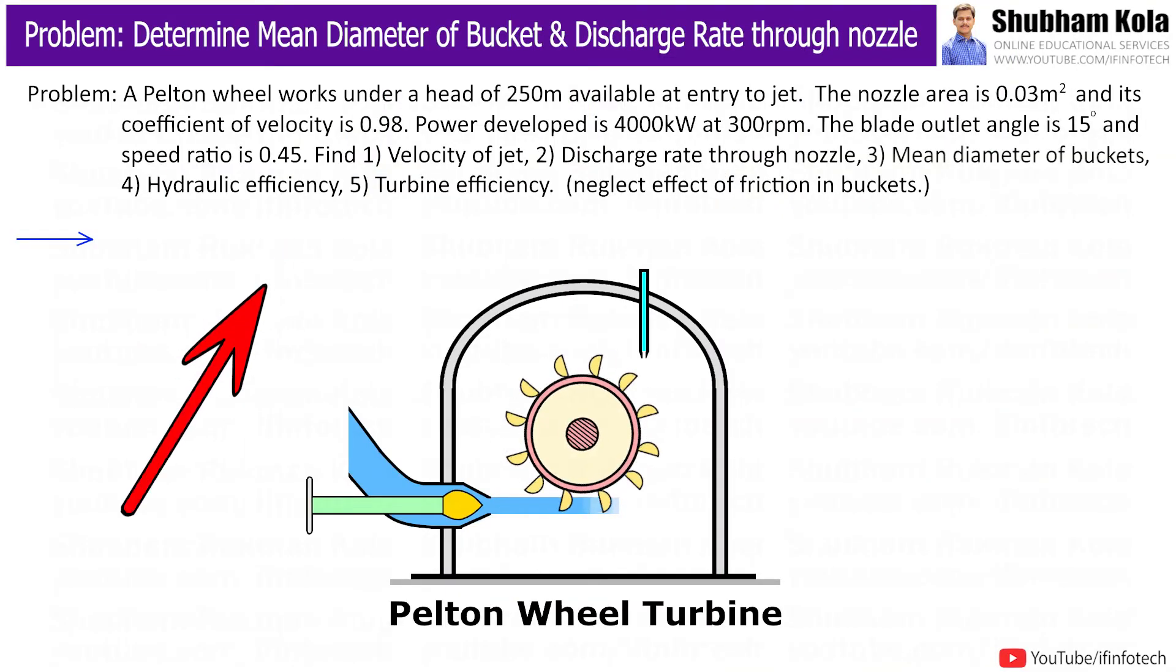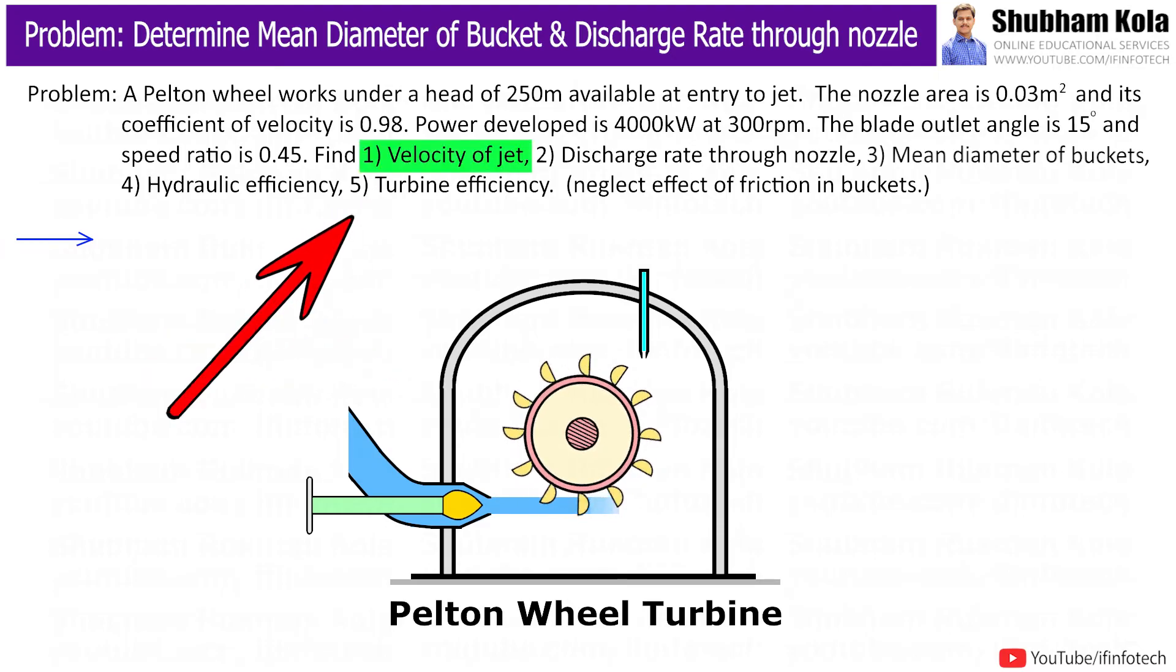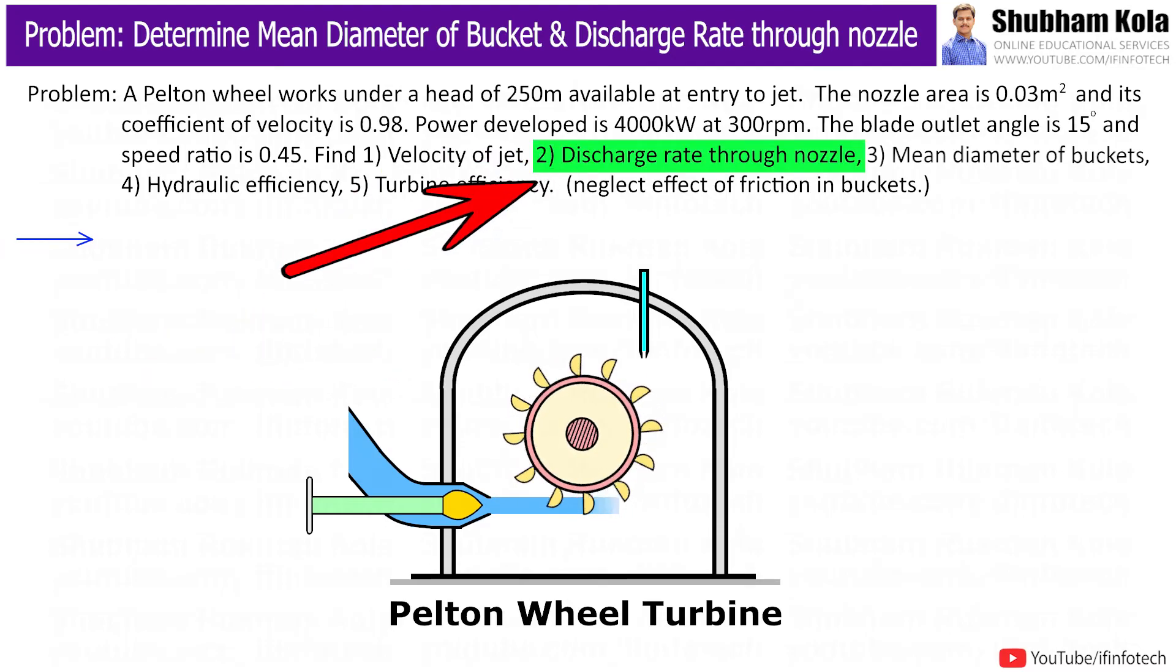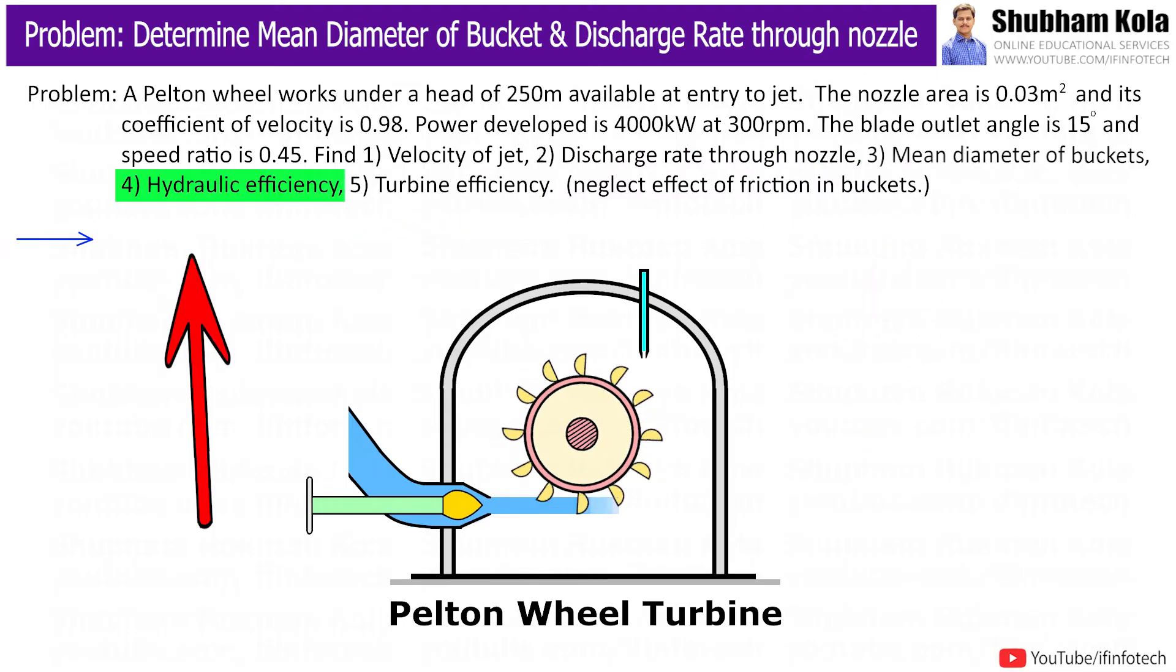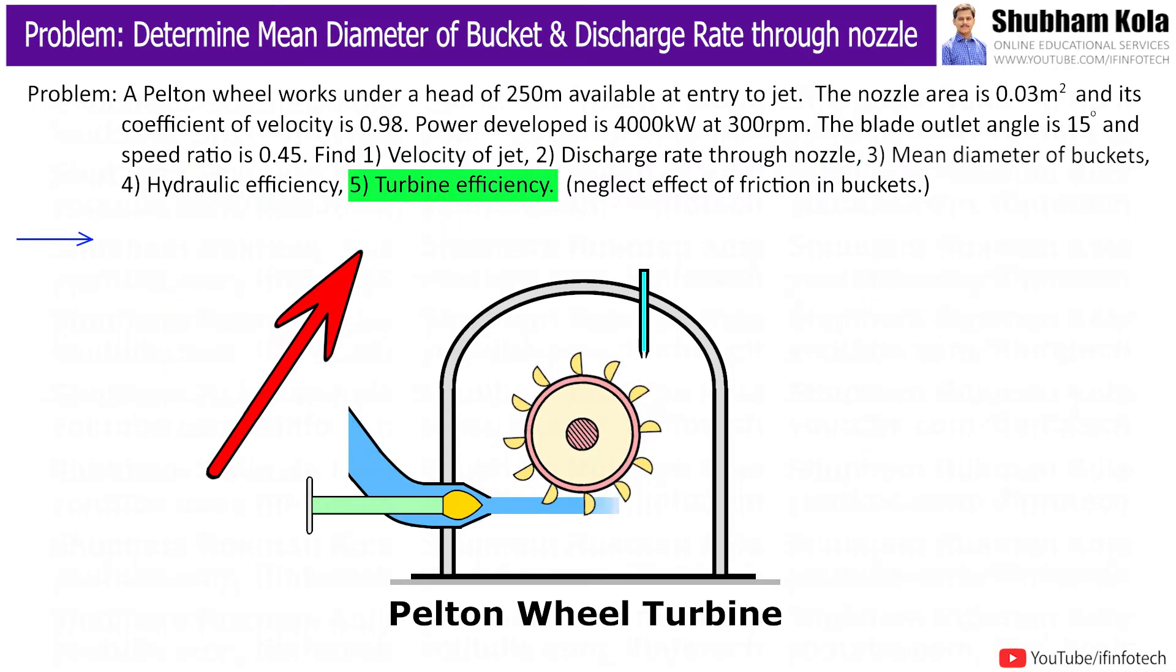In this video, we are going to solve problems on Pelton wheel turbine where we will calculate velocity of jet of turbine, discharge rate through nozzle, mean diameter of bucket, hydraulic efficiency and turbine efficiency.